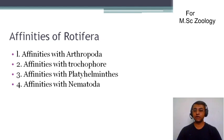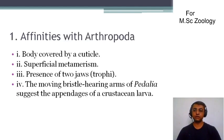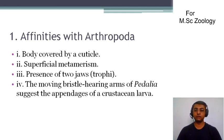Rotifera are having resemblances with Arthropoda, trochophore larva, Platyhelminthes, and Nematoda. First of all, we are taking the affinities with Arthropoda. We see that the body covering is composed of cuticle, and it is found in Arthropoda also.